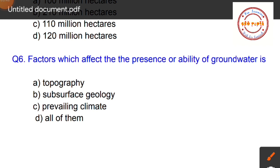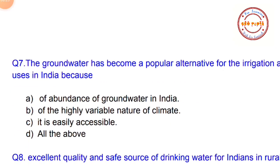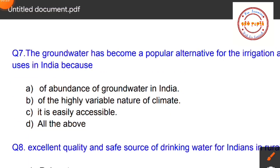Question number six: What are the factors that affect the presence and availability of groundwater? Option A: topography, Option B: subsurface geology, Option C: prevailing climate, Option D: all of them. Since all three factors — topography, subsurface geology, and prevailing climate — affect groundwater availability, Option D: all of them is the correct answer.